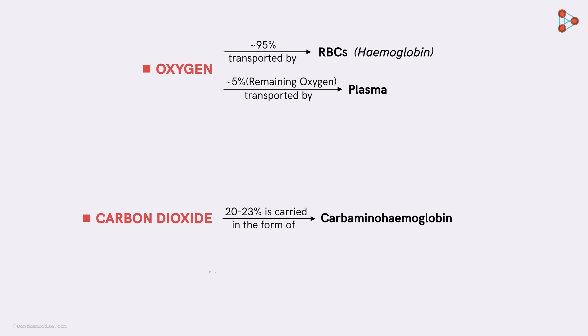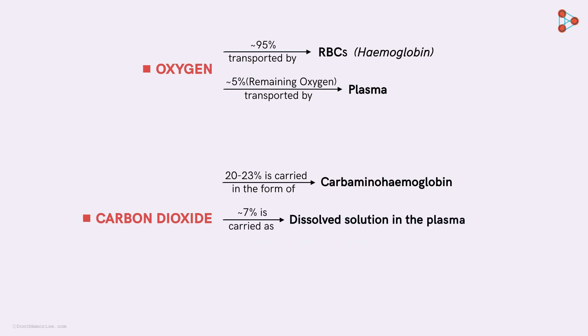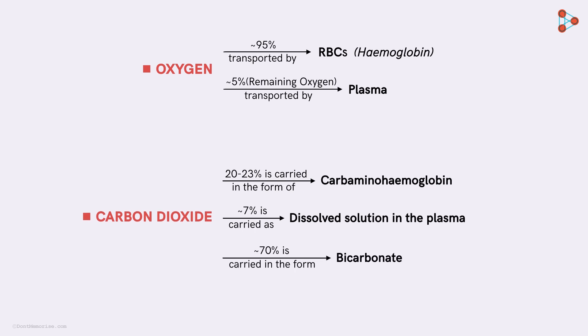Well, carbon dioxide is mainly transported through the plasma. This occurs in two forms. Around 7% is carried as dissolved solution in the plasma, and the remaining 70% is carried in the form of bicarbonate.